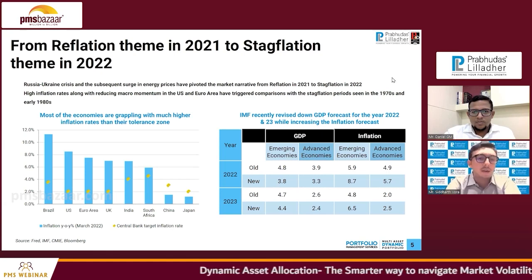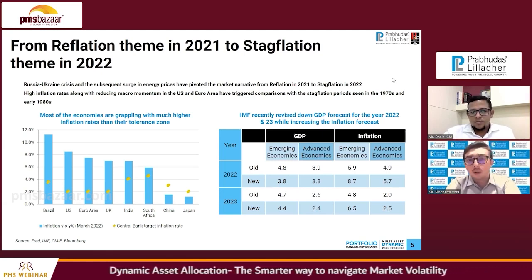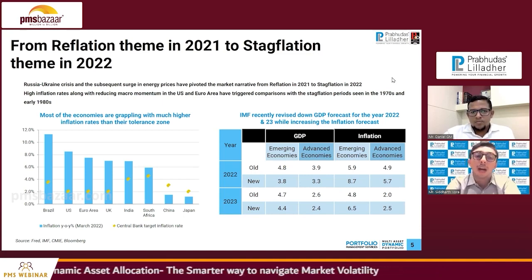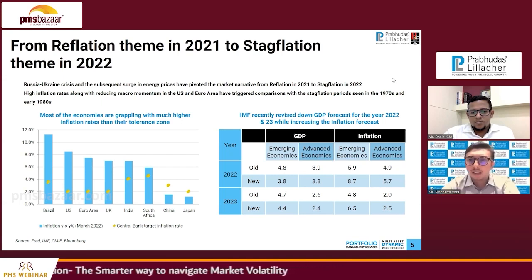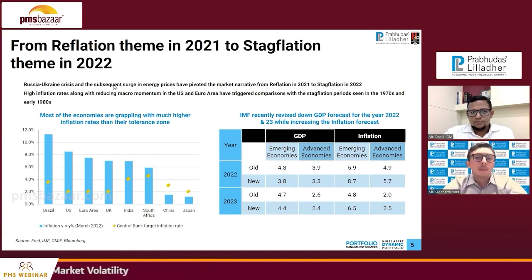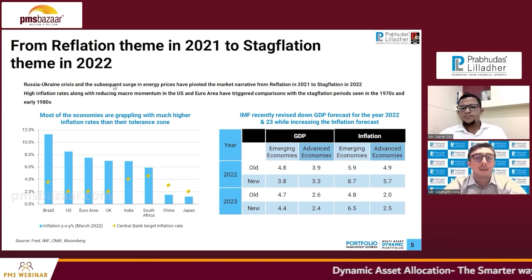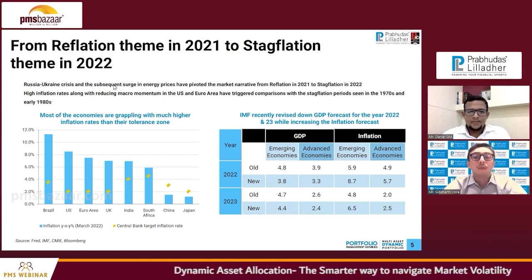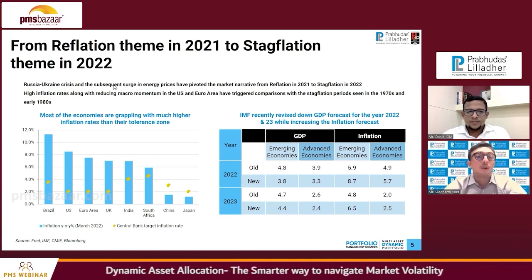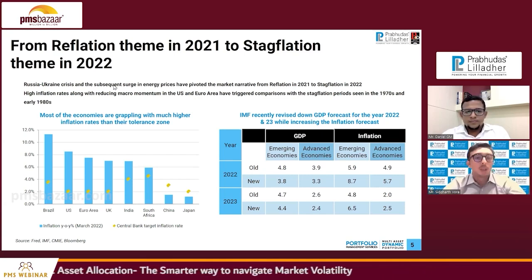The data shows all major economies are dealing with inflation numbers well above their central bank targets. The IMF has also slashed GDP forecasts across the board for both emerging and advanced economies, while increasing inflation forecasts. For example, for 2023, inflation forecasts for emerging economies were revised from 4.8% to 6.5%, while GDP forecasts were cut from 4.7% to 4.4% for 2023 and from 4.8% to 3.8% for 2022. This is a difficult macro and monetary combination.